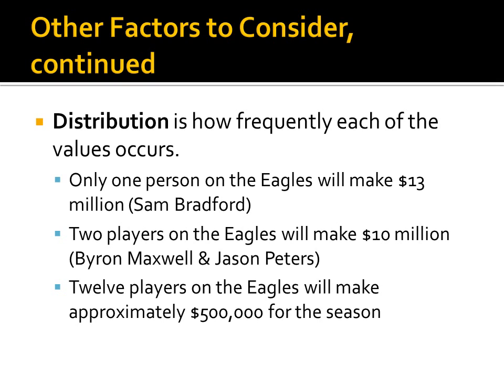Another issue is distribution — how frequently each of the values occurs. There is only one person on the Eagles who makes 13 million, and that is Sam Bradford. There are two players who make 10 million dollars: Byron Maxwell and Jason Peters. However, there are 12 players on the Eagles who will make approximately half a million dollars for the season. Distribution is a very important aspect when looking at any research.